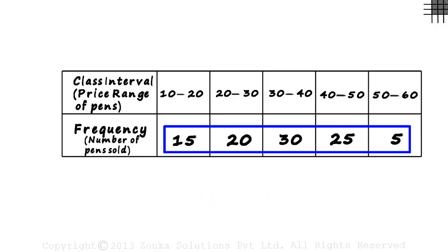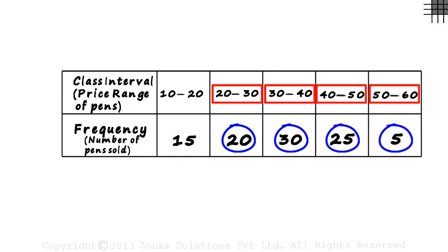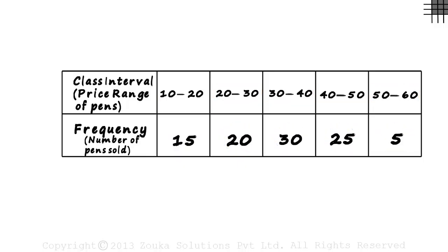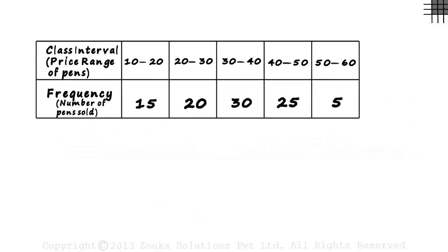In the second row we have the number of pens sold for each category. 15 pens of this category were sold, 20 of this category and so on. Until now we have seen examples of bar graphs but never seen bar graphs used to represent continuous form of grouping. Let's see how we can do that.